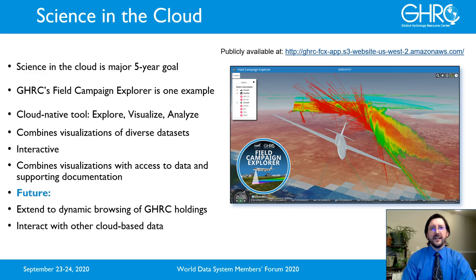GHRC has focused on supporting science in the cloud as part of our five-year effort. One example is GHRC's Field Campaign Explorer, or FCX. This is a cloud-native tool developed to explore, visualize, and analyze diverse data in a common framework. GHRC's holdings are a combination of ground, airborne, and satellite-based data. These datasets have a variety of temporal and spatial resolutions that have to be addressed. FCX is an interactive viewer and combines visualizations with access to data and supporting documentation, enabling improved access to these data.